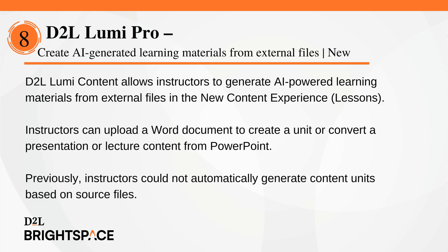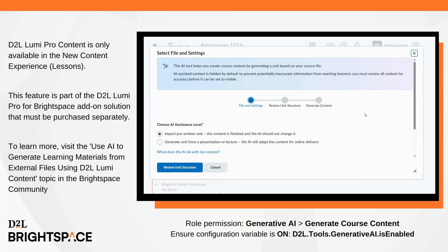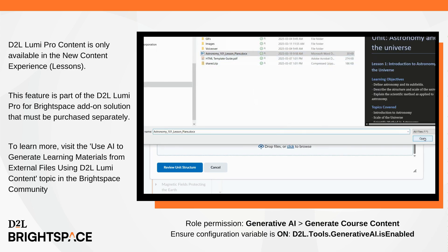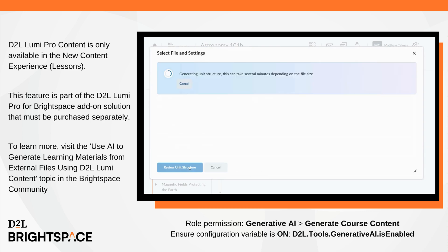D2L Lumi content allows instructors to generate AI-powered learning materials from external files in the new content experience, or lessons. Instructors can upload a Word document to create a unit, or convert a presentation or lecture content from PowerPoint. When instructors add the AI-generated unit to content, that unit remains hidden and locked from learners until instructors review it. This ensures that all AI-generated content is verified with human and instructor-led oversight. Previously, instructors could not automatically generate content units based on source files. D2L Lumi Pro content is only available in the new content experience, or lessons. This feature is part of the D2L Lumi Pro for Brightspace add-on solution that must be purchased separately.